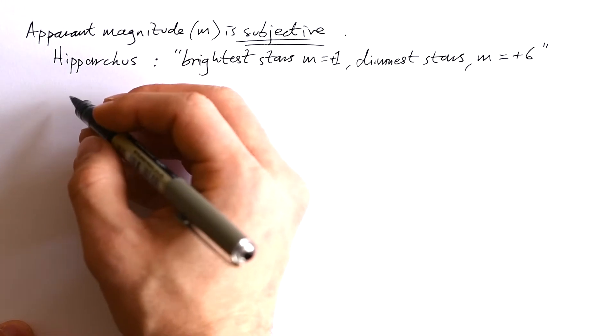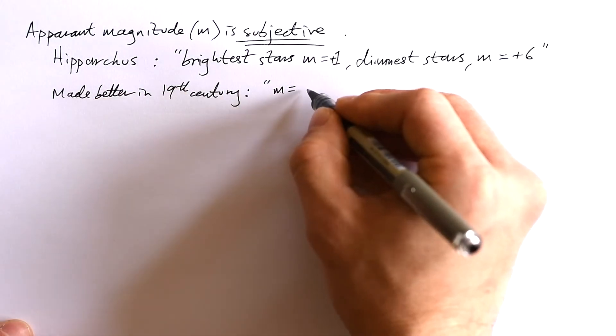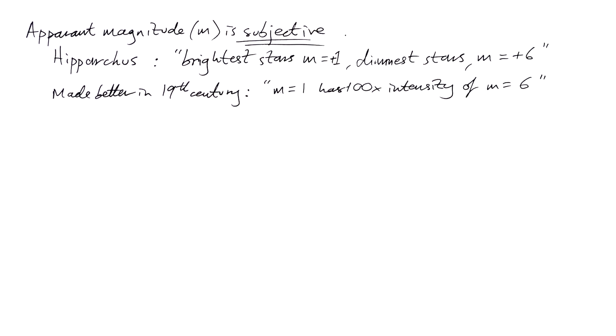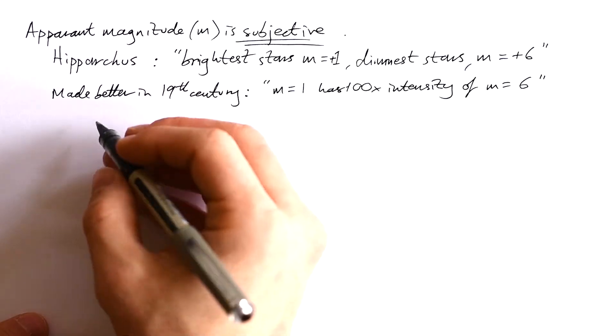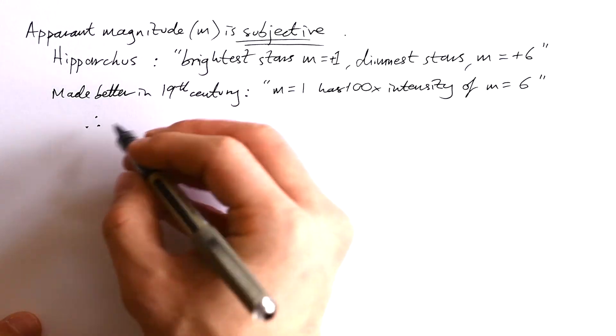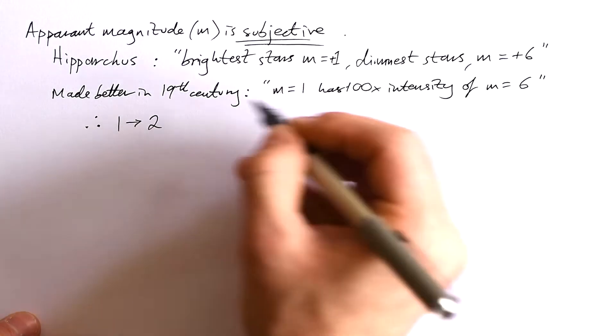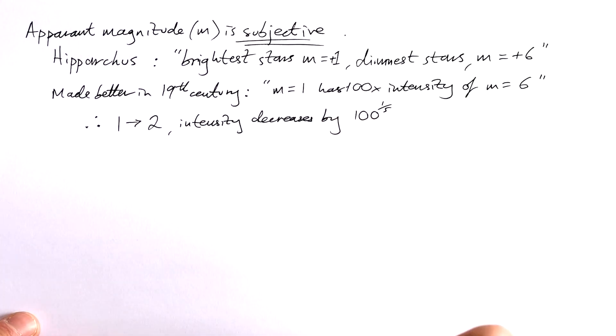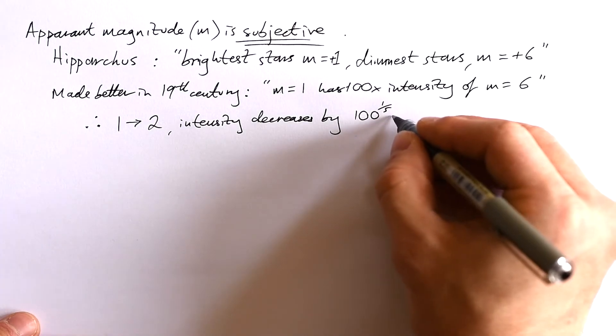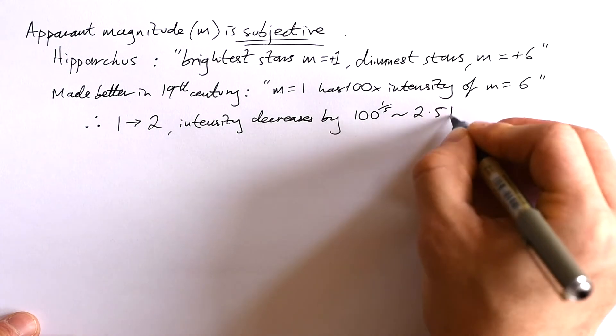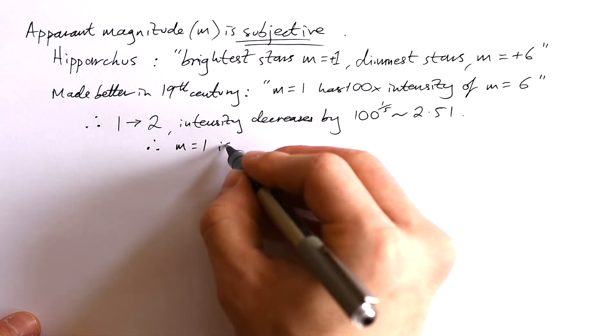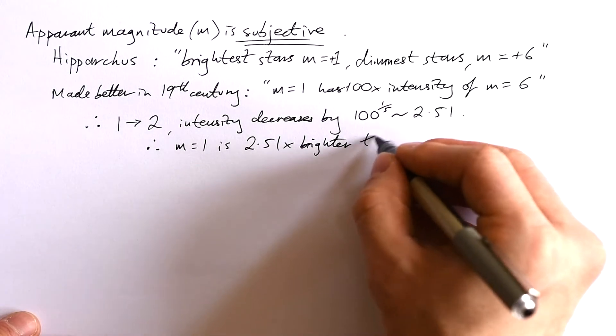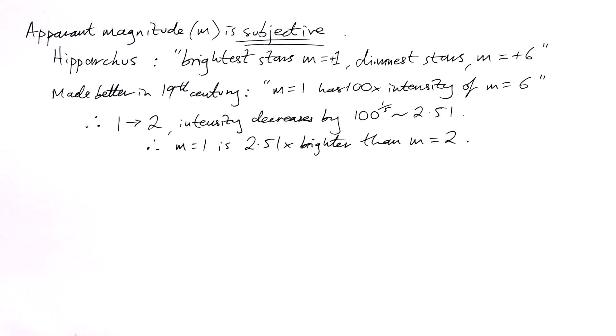What scientists did in the 19th century was say a star with apparent magnitude one has an intensity 100 times that of a star with apparent magnitude six. This means going from magnitude one to two, intensity decreases by 100 to the fifth root, which is about 2.51. Therefore, m=1 is 2.51 times more intense than a star with m=2.